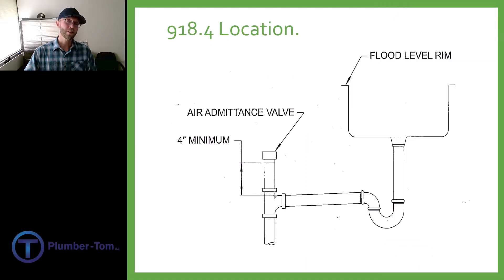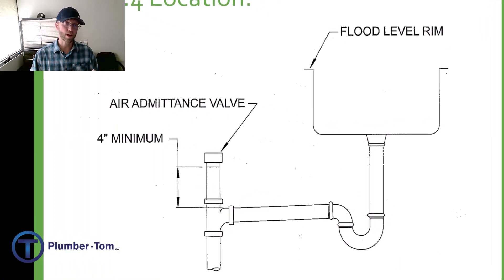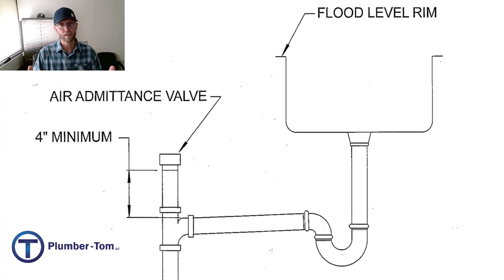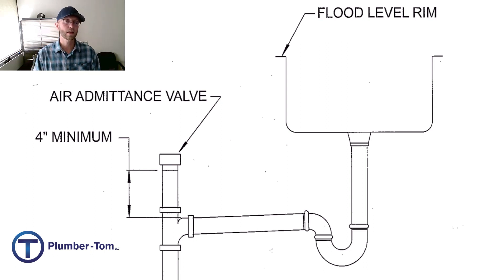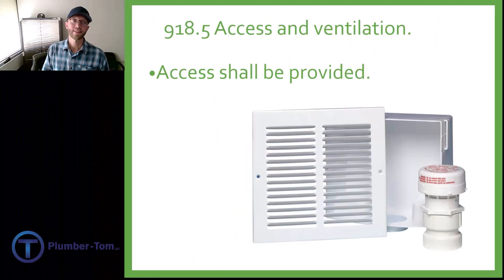918.4 talks about the location of air admittance valves in relation to fixtures. When it comes off a branch for a p-trap, that air admittance valve has to be at least four inches above that trap arm. Usually that's quite manageable within a cabinet. Most of the time you're going to want to get that air admittance valve up as high as you can — four inches is the minimum.